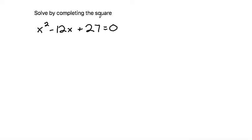There are a few different methods to complete the square, but the method I like starts by moving any constant term away from the terms with x. So let's subtract 27 from both sides to get x squared minus 12x equals negative 27.